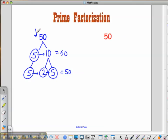So the prime factorization for 50 is 2 times 5 times 5, which can also be written as 2 times 5 to the second power.